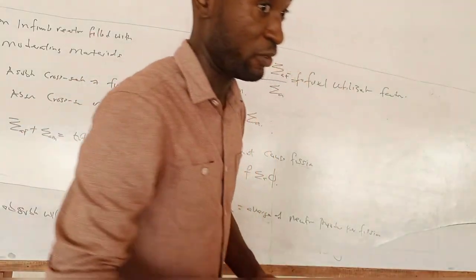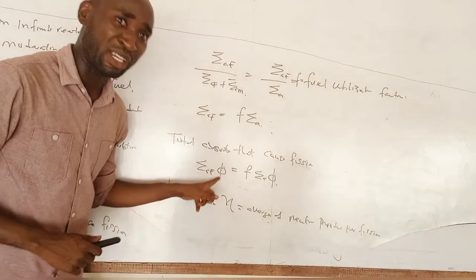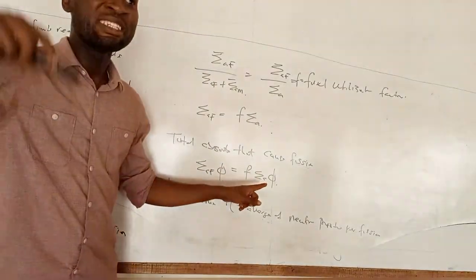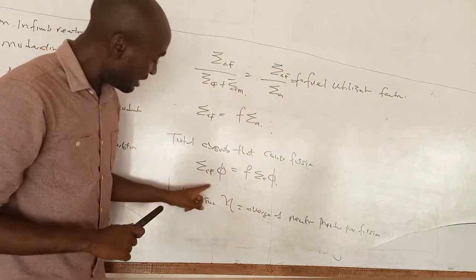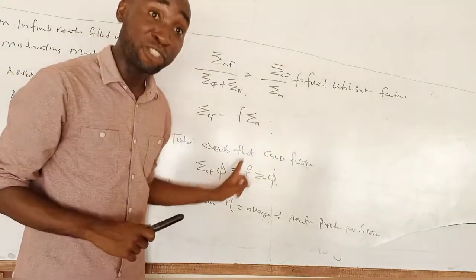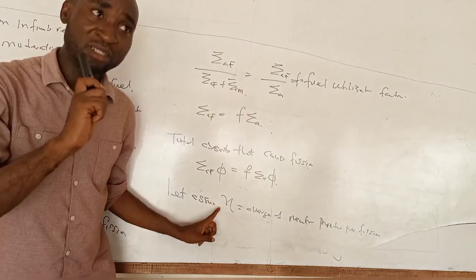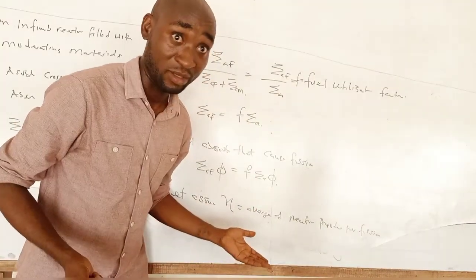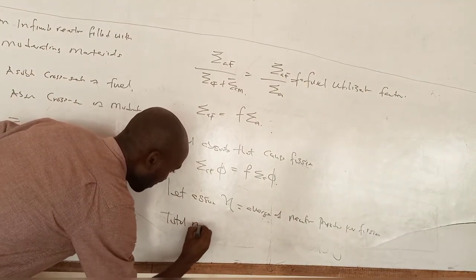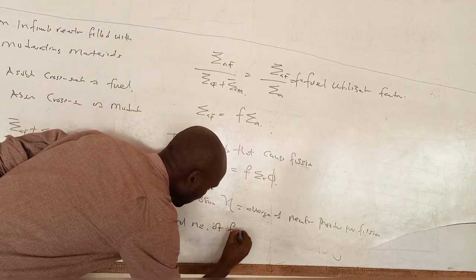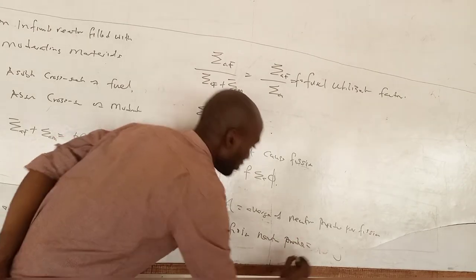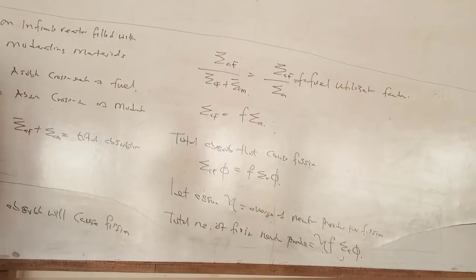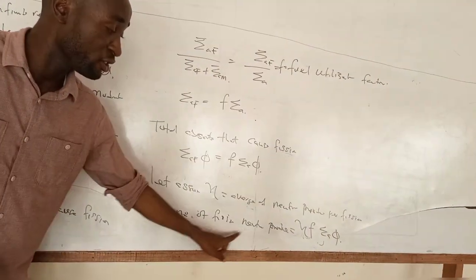So to summarize: this is the number of absorptions that will occur, which gives us the number of fissions. We then multiply by η, the number of neutrons produced per fission. If 10 fissions occur and 2 neutrons are produced per fission, then 20 neutrons total are produced. The total number of fission neutrons produced is η·f·Σ_A·φ.